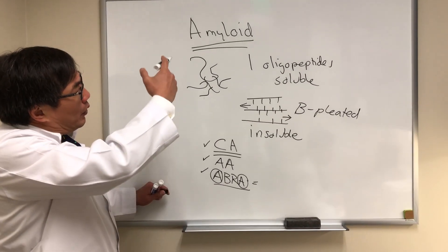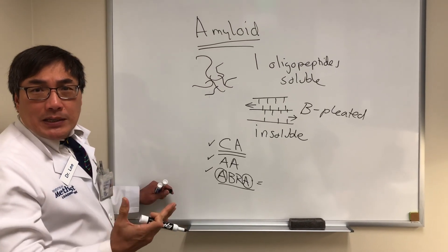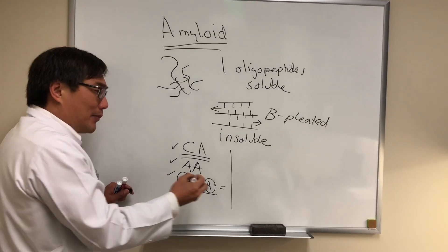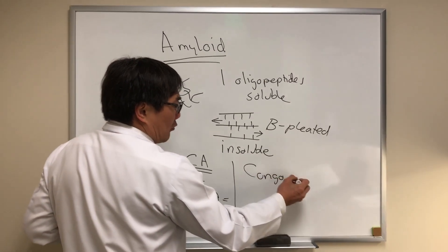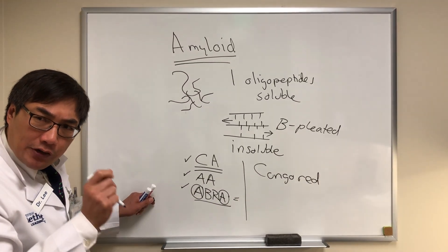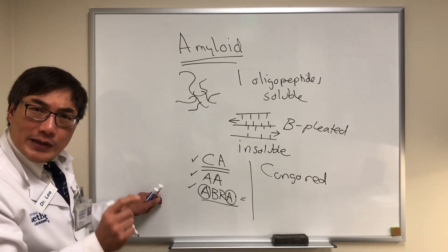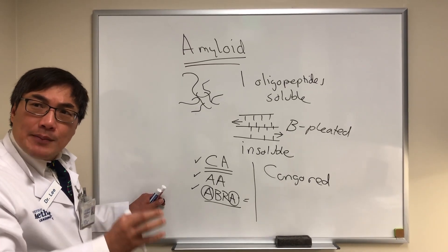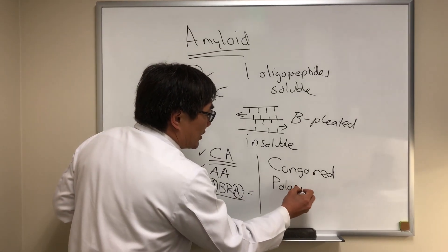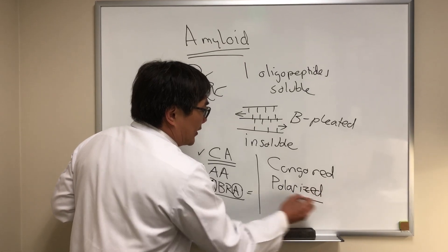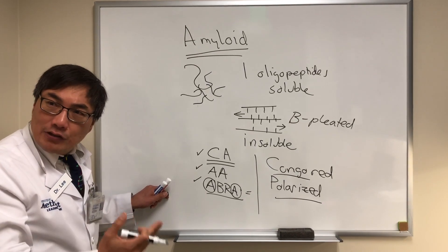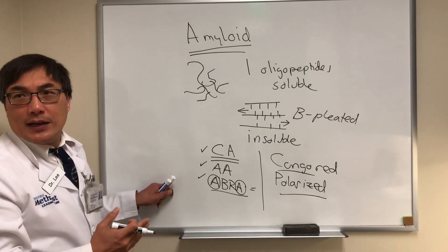When we test for amyloid, we have to use special stains because it's extracellular. The special stain used is called Congo Red. Amyloid demonstrates a unique property under polarized light — it demonstrates birefringence, specifically apple green birefringence under polarized light. The standard stain, H&E, will not detect amyloid unless we're specifically looking for it, and that normally means we have to have a biopsy.